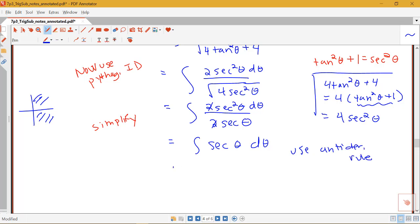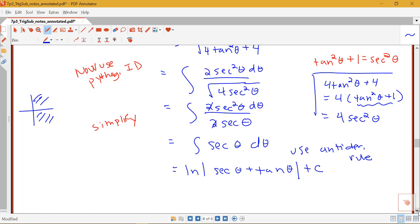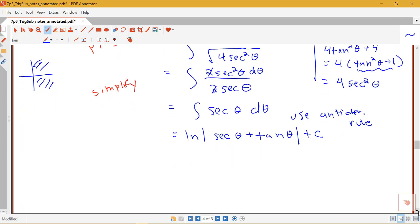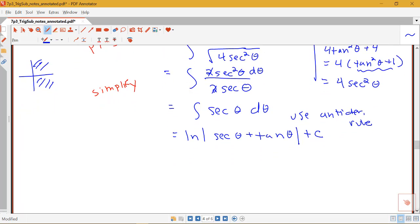So now this is one of our antiderivative rules. This is why it's so important that you know your antiderivative rules. You don't want to get up to this point in a problem, have done so much work, and then be stuck because you forget what the antiderivative rule is. So we know that this is log of the absolute value of secant theta plus tan theta plus c. And we know we're not done because my original question was asking for an integral with respect to t. So I need to convert this from theta back to t. We've got to use the triangle.